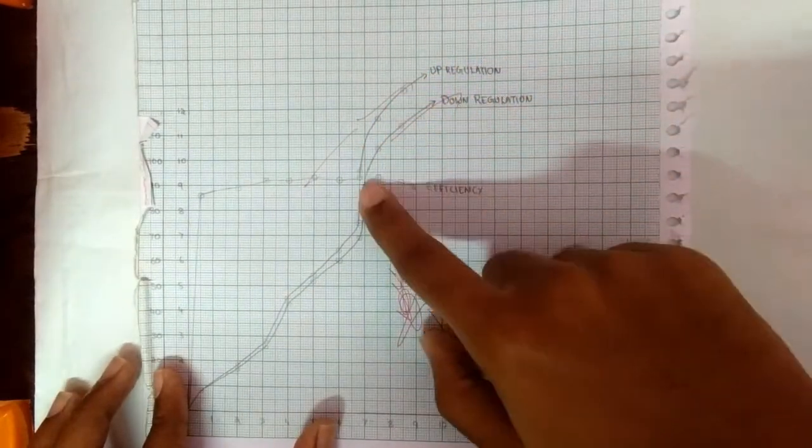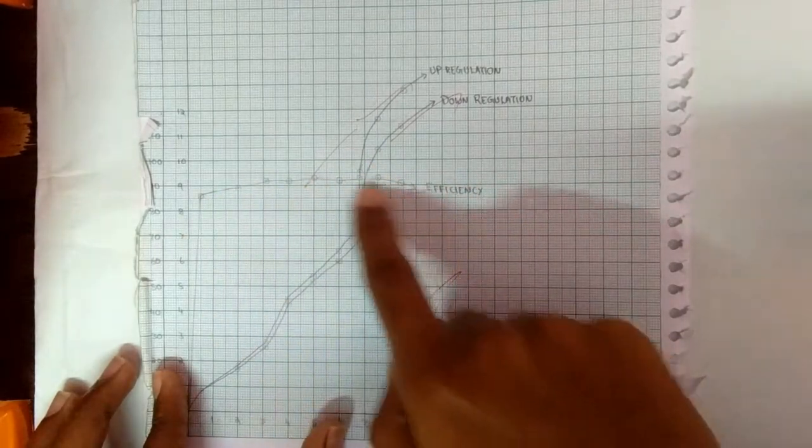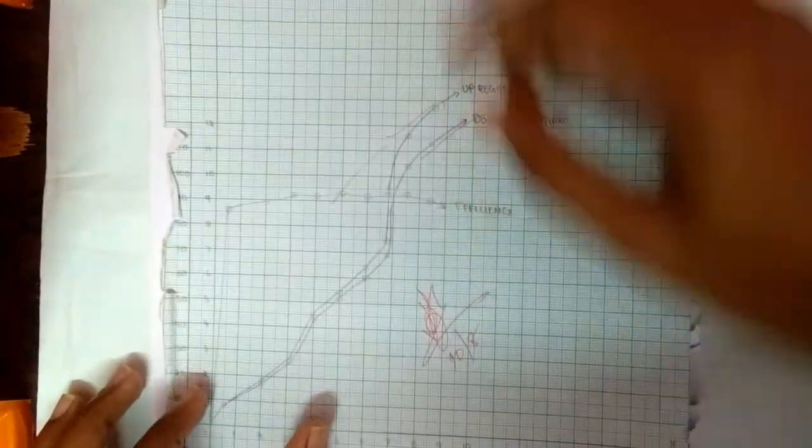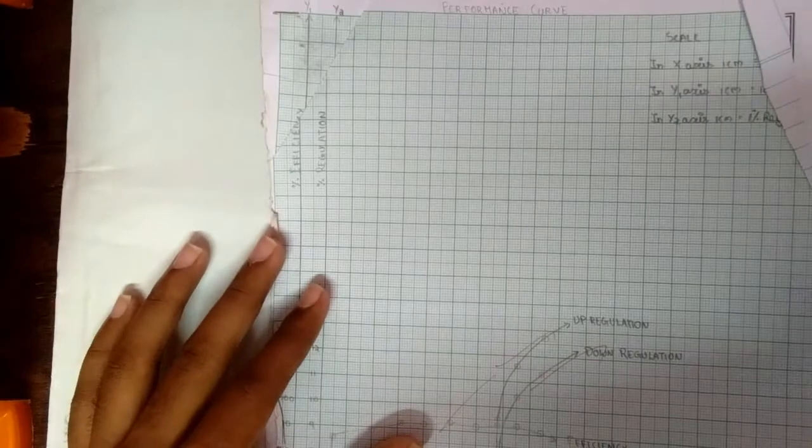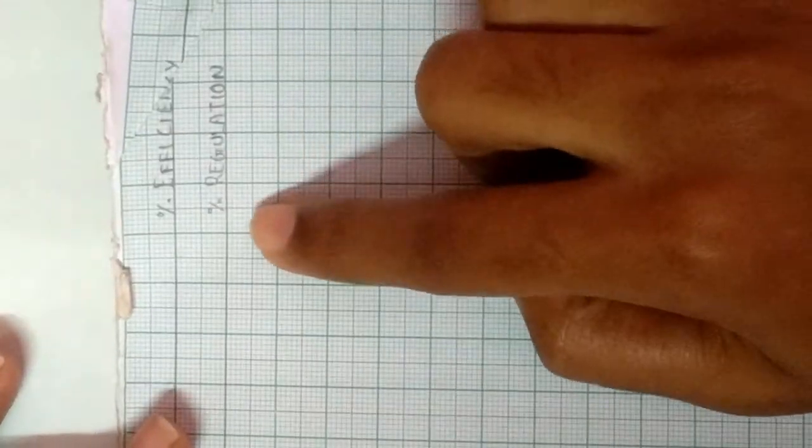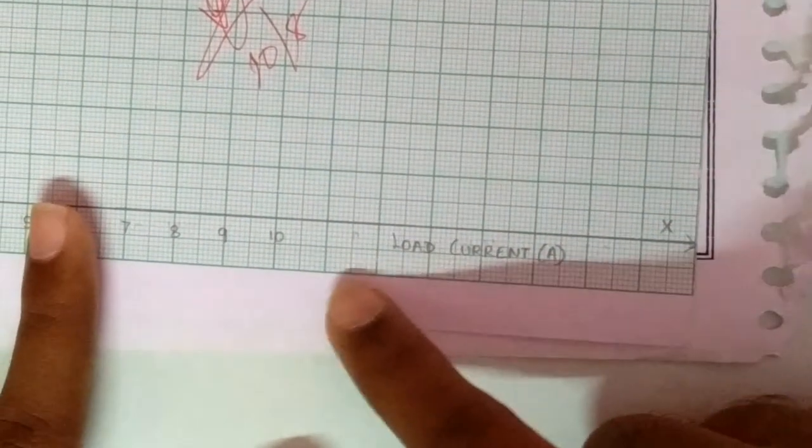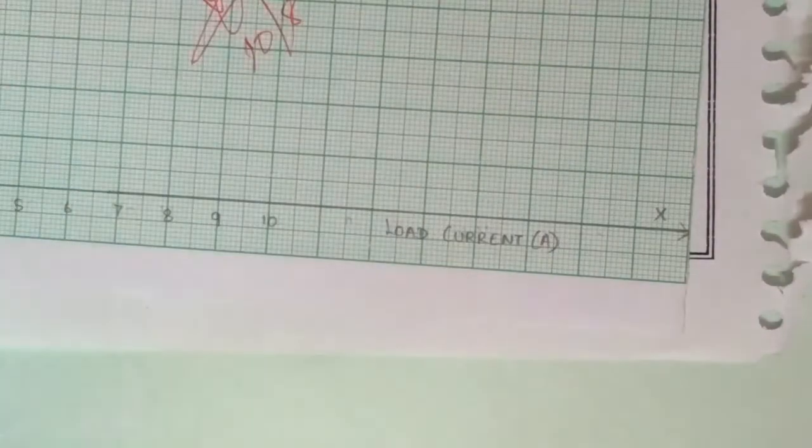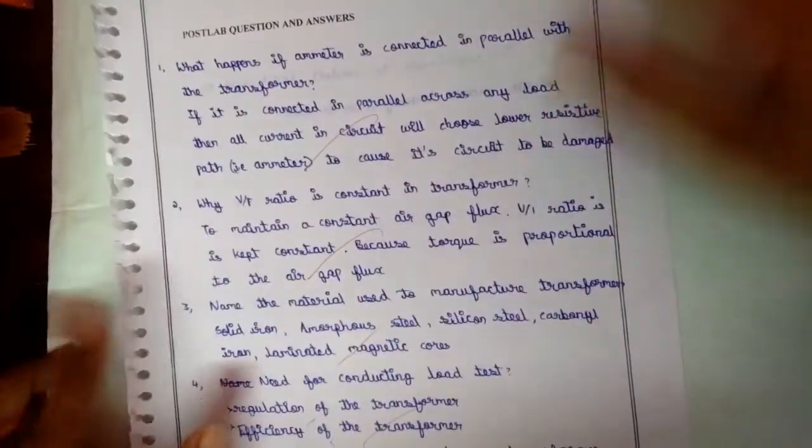This is for up regulation and down regulation, and percentage efficiency is this one. In the y-axis we have percentage efficiency and the percentage regulation, and in x-axis we have load current. With this, the experiment is over.